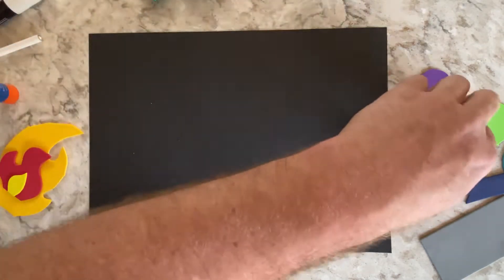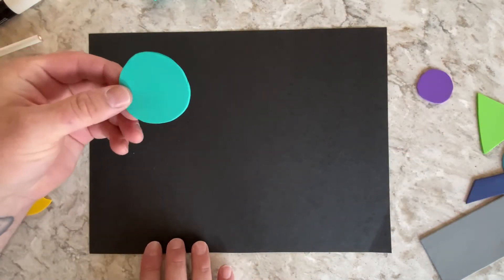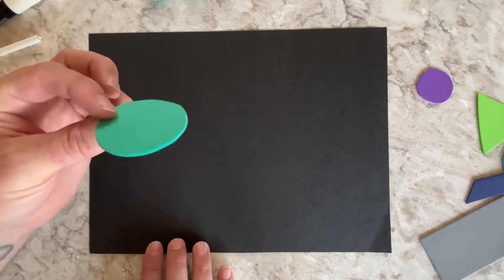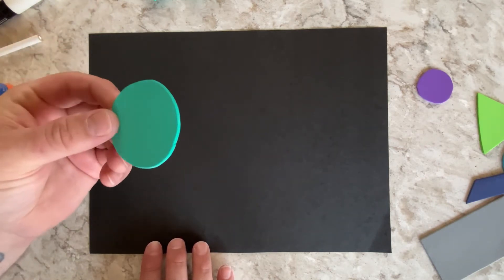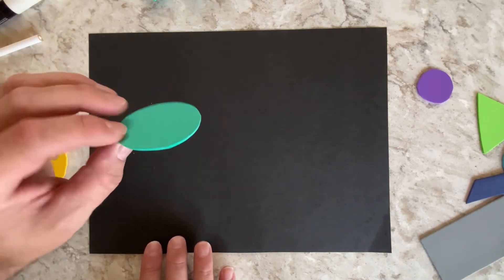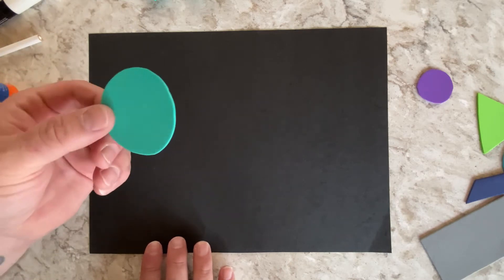And you'll also need some different color construction paper. Now I'm using foam paper. Foam paper is really cool. You can get it at any hobby store, craft store. We have it at school. It's pretty fun to use. It just adds a nice texture to it and it makes it a little bit more 3D.